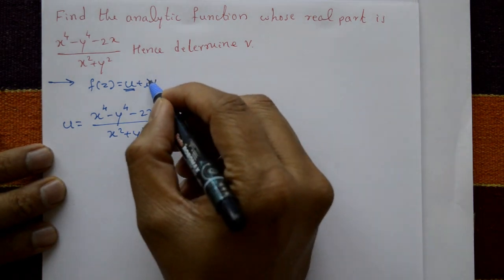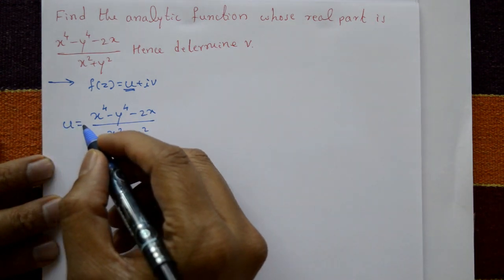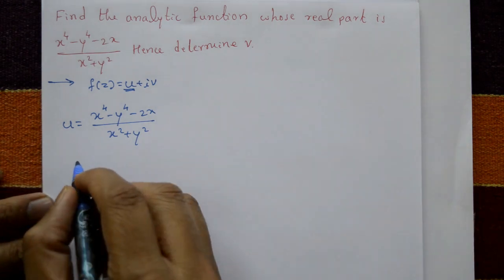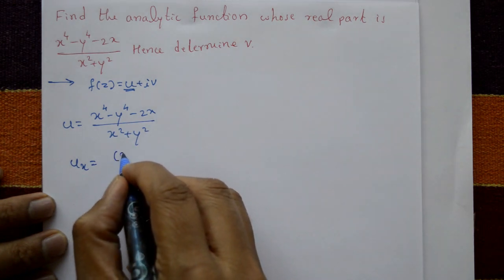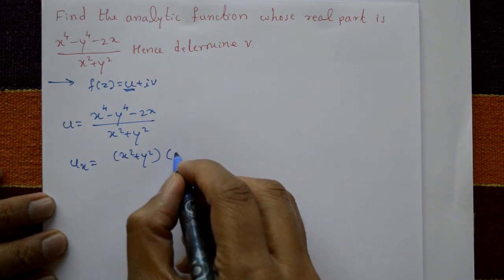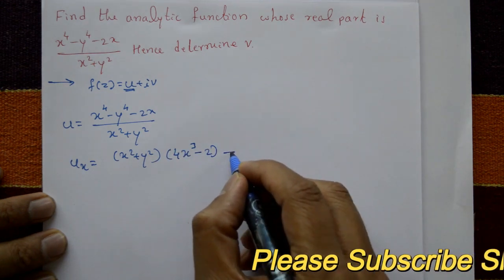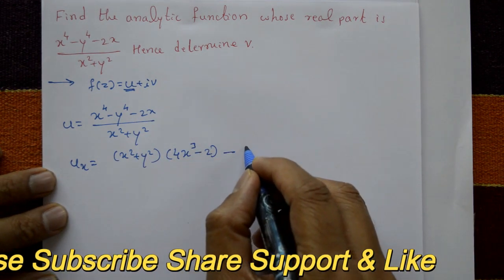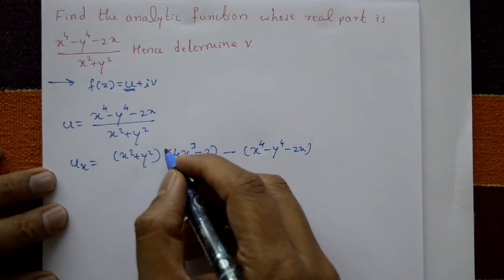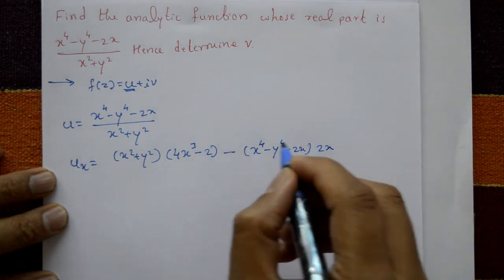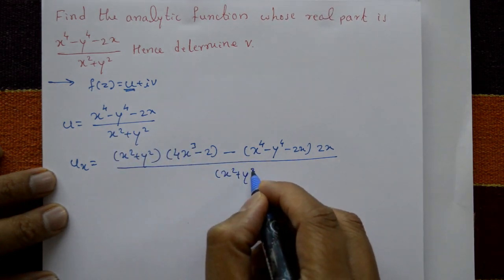Differentiate u with respect to x and with respect to y partially. Using the quotient rule, ∂u/∂x equals: (x² + y²) times the derivative of the numerator, which is (4x³ - 2), minus the numerator (x⁴ - y⁴ - 2x) times the derivative of the denominator, which is 2x, all divided by (x² + y²)².